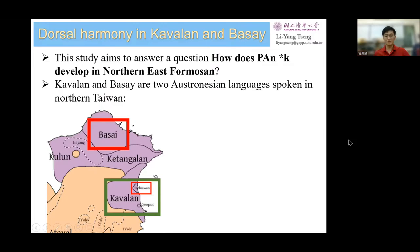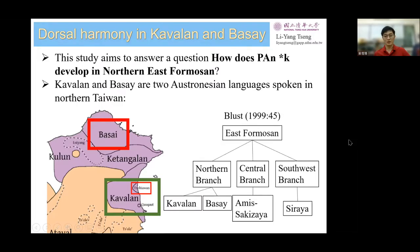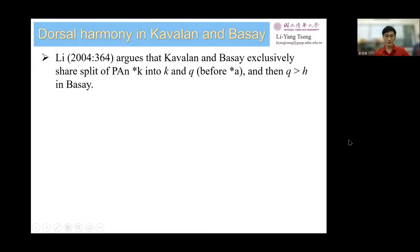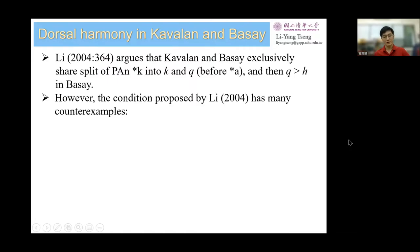They belong to a bigger subgroup called East Formosan, which also includes Amis, Sakizaya, and Siraya. Li 2004 argues that Kabbalan and Basai exclusively shared a split of Proto-K into K and Q, with the condition that it was before Proto-R, and then Q became H in Basai. However, the condition proposed by Li has many counterexamples.